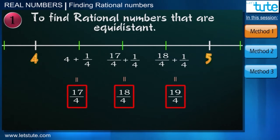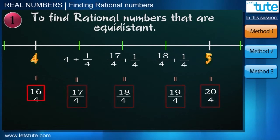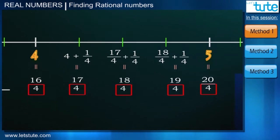Note that here we can also write 4 as 16 upon 4. Now what can you observe here? We can see that the numerator is in increasing order and denominator is a constant number.